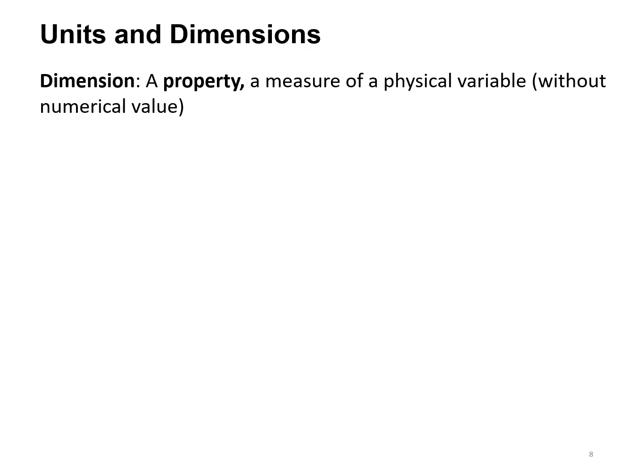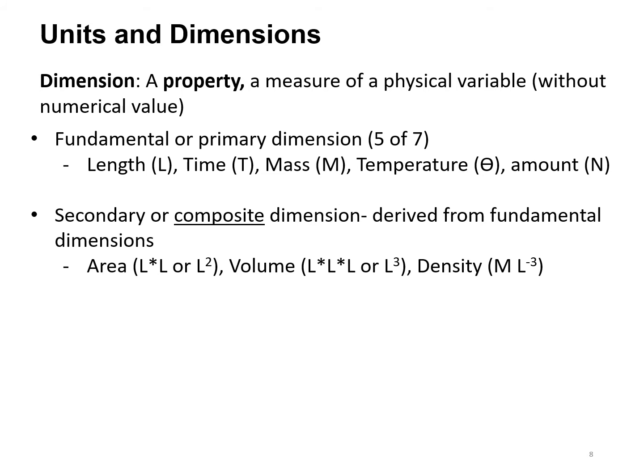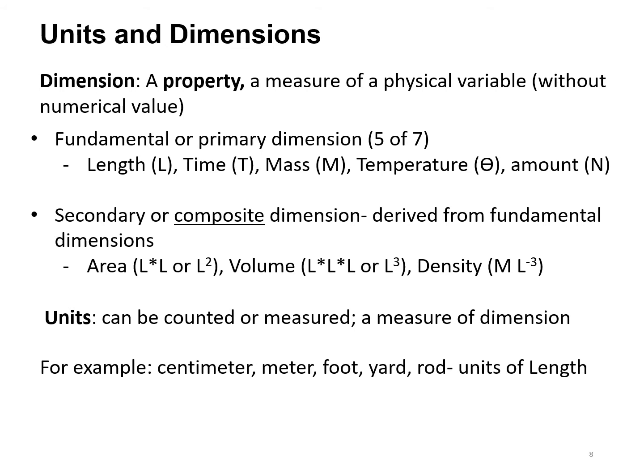A dimension is a property, a measurement of a physical variable without a numerical value. We have length, time, mass, temperature, amount. Secondary or composite dimensions are derived from fundamental dimensions. Area is length times length or length squared. Volume is length cubed. Density is mass per length cubed.